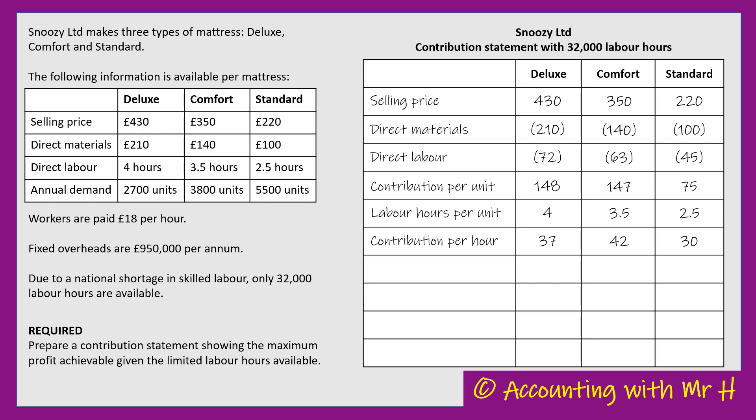Once I've got the contribution per scarce resource per unit of limiting factor - in this case labour hours - I'm going to rank order them. The best thing to make first, to maximise contribution and therefore maximise profit, is Comfort ranked first, then Deluxe, and then if there are any labour hours left, Standard.